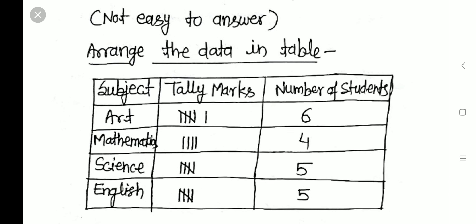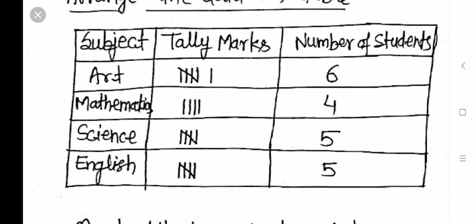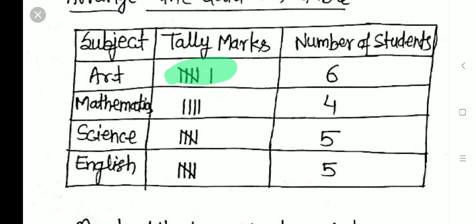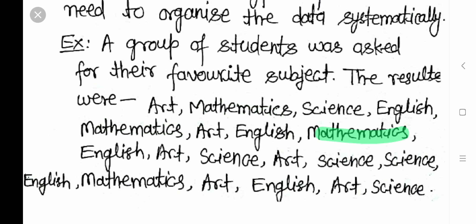To analyze this, we arrange the data in a table with subjects — Arts, Mathematics, Science, and English — in the first column, tally marks in the second, and number of students in the third. Counting for Arts: 1, 2, 3, 4, 5, 6 — so Arts has 6 students. In tally representation, up to 4 we draw four lines, and the 5th line crosses them, giving groups of 5. Arts has 6, represented as one group of 5 plus one extra.